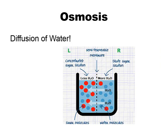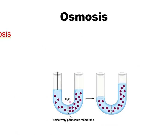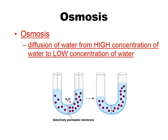Osmosis is another one — this is your diffusion of water. You're moving from high to low concentration, but what's moving is the water. A semi-permeable membrane isn't going to let sugar molecules through because they're too big, but it will let water molecules through. The water is going to move from where there's a lot of water to where there's less water, and that continues until equilibrium is reached. Osmosis is the diffusion of water from high concentration to low concentration of water.